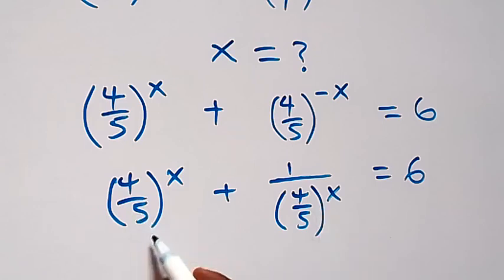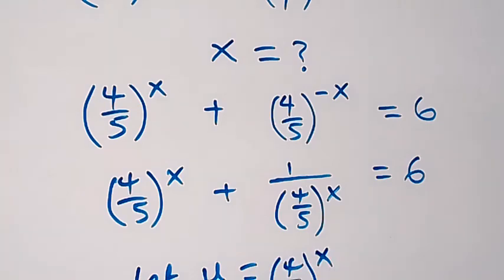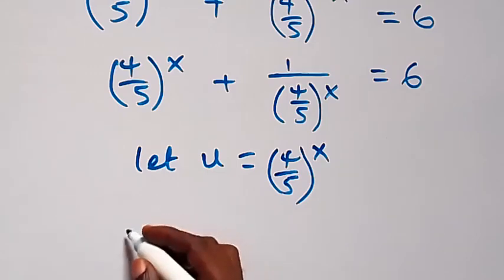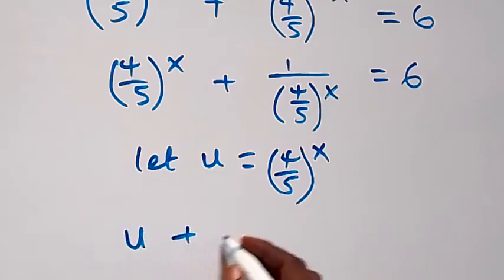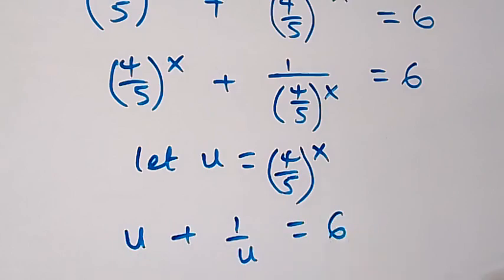From here we have 4 over 5 raised to power x. Let the letter u be equal to 4 over 5 raised to power x. Then what we have left becomes u plus 1 over u, equals to 6.